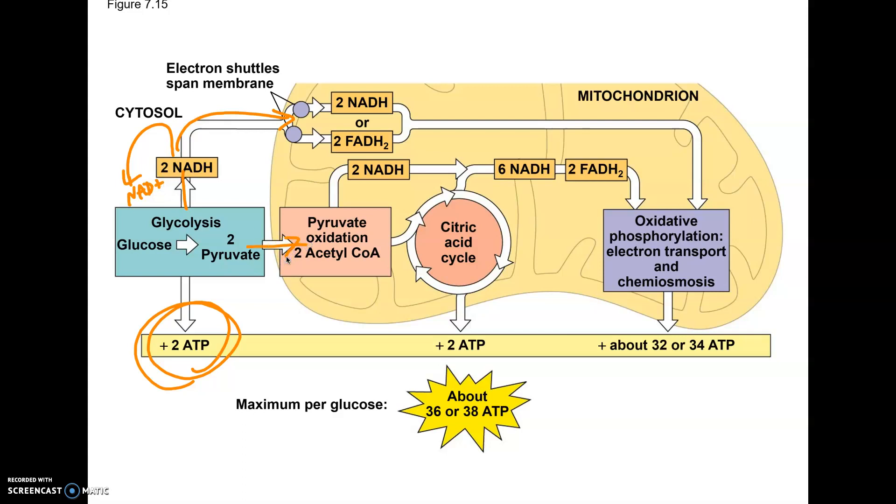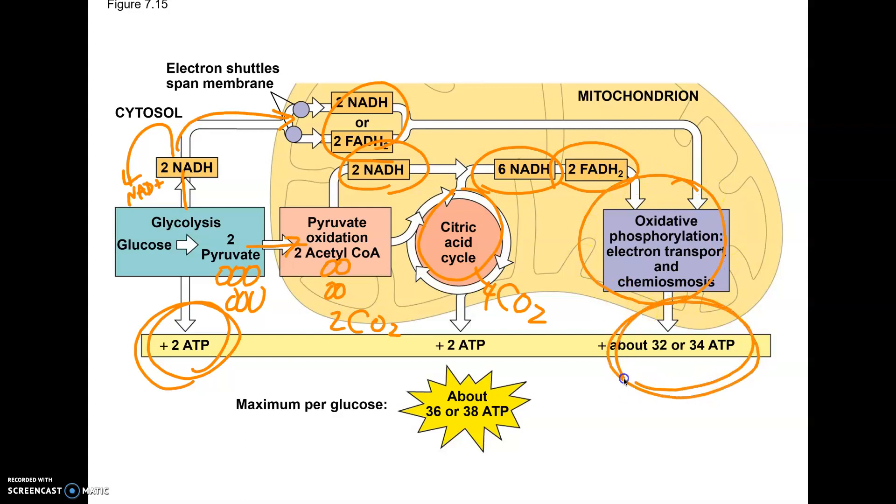Oxidation of pyruvate. So the 3-carbon pyruvates, there's 2 of them, they're actually going to turn into a 2-carbon molecule called acetyl coenzyme A, and we're going to make some carbon dioxide. The citric acid cycle is going to finish making some more carbon dioxide, so all of our glucose becomes carbon dioxide. And the citric acid cycle is going to make some more of these coenzymes, NADH and FADH2.